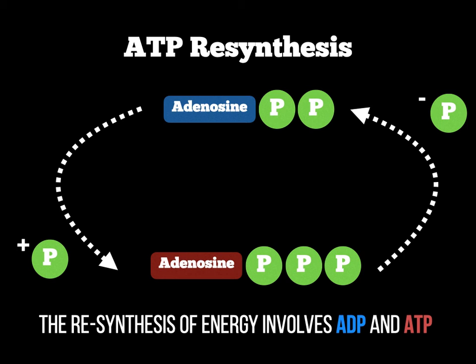To recap the reactions: when ADP gains the phosphate — on the left of the diagram — this is an endothermic reaction. And when we release the phosphate, remember EX for exit, we are using an exothermic reaction. This is the ATP resynthesis cycle.